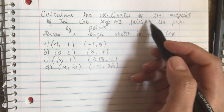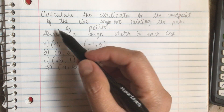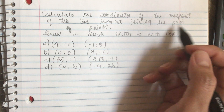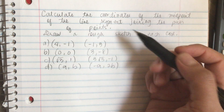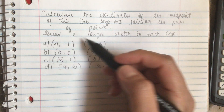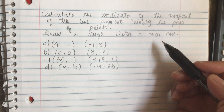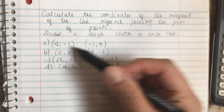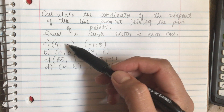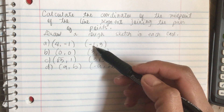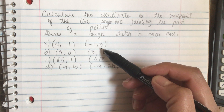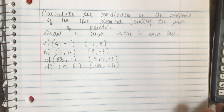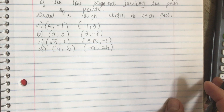Calculate the coordinates of the midpoint of the line segment joining the pair of points. Draw a rough sketch in each case. So we have (4, -1) and (-1, 3). Let's do that one first.